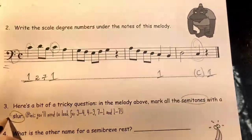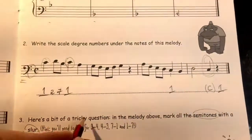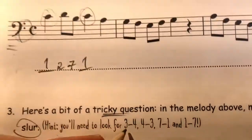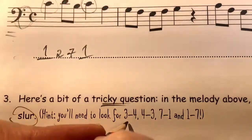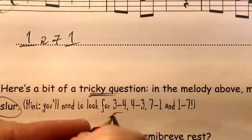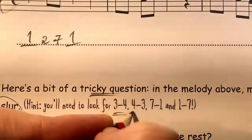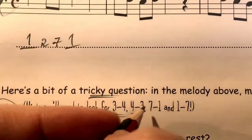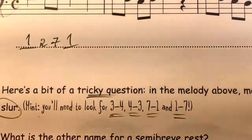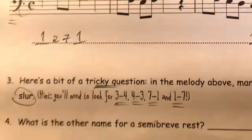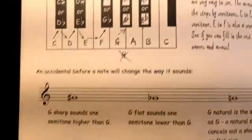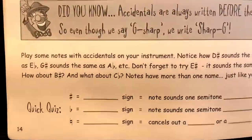Question three: in the melody above, mark all the semitones with a slur. You can look for these combinations of scale degree numbers next to each other — three and four, four and three, seven and one, or one and seven. You can also look back at the picture of the keyboard on page 14, which will remind you how to work out tones and semitones.